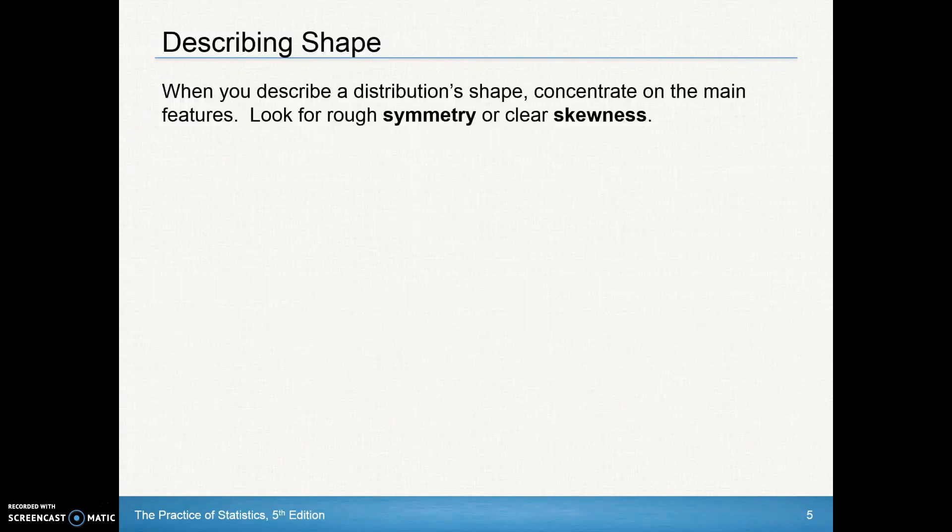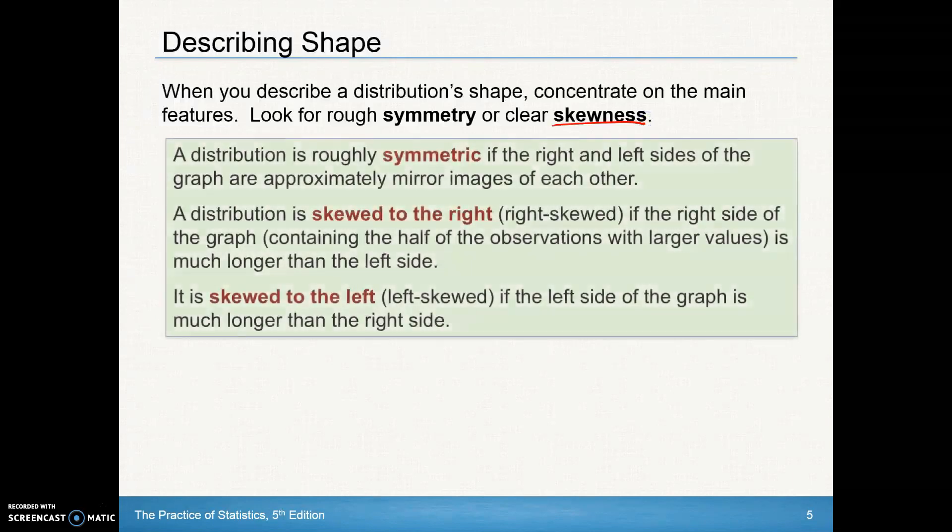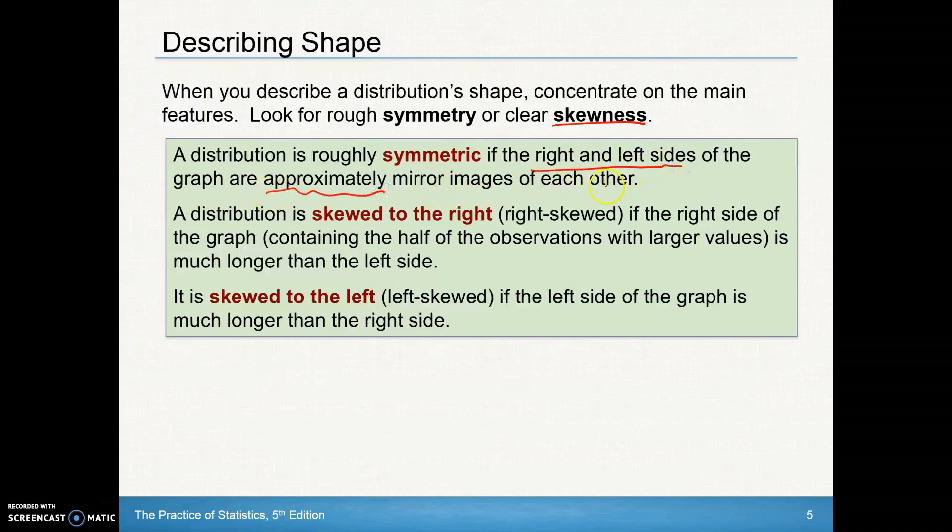So we want to be able to describe distributions, so we're going to concentrate on those main features. And other things we're going to look for are symmetry or clear skewness. Symmetry is something you would have studied in geometry a while back. That basically is the same thing on the left side that is on the right side. There's a line of symmetry going through the middle that if you fold it up on each other should be the same. So in other words, the right and left sides of a graph are approximately mirror images of each other.